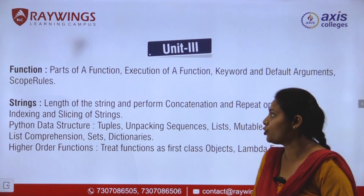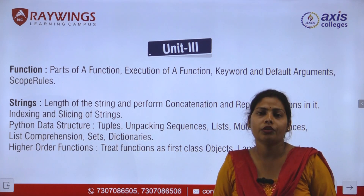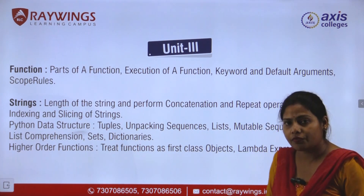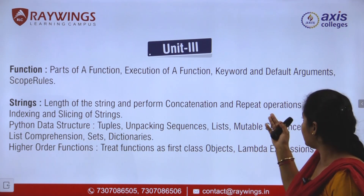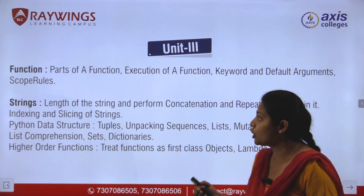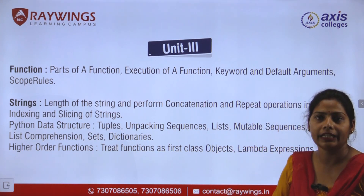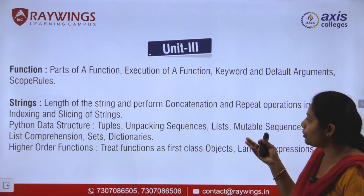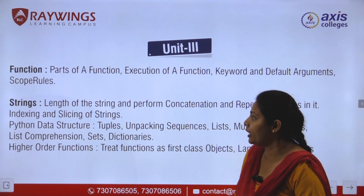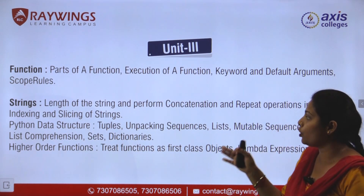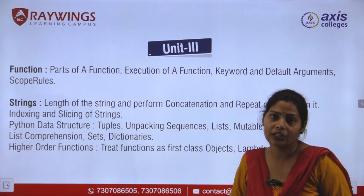In Unit 3, we will talk about functions — how they are created, which keyword is used to define a function, parts of the function, parameters passed in a function, how a function is executed and called, keywords and default arguments. Scope rules mean the scope of a variable defined inside a function — inside and outside the function. Then, coming to strings: a string is a data type in Python, and we will look at the length of a string and string operations such as concatenation, repetition, indexing, and slicing.